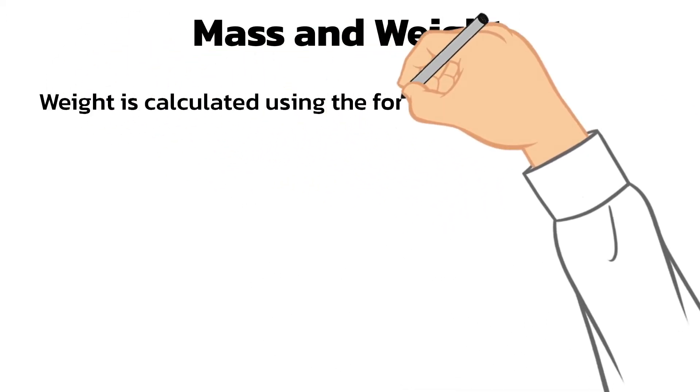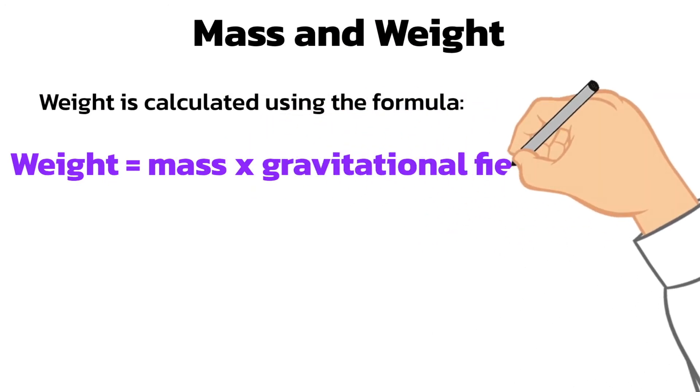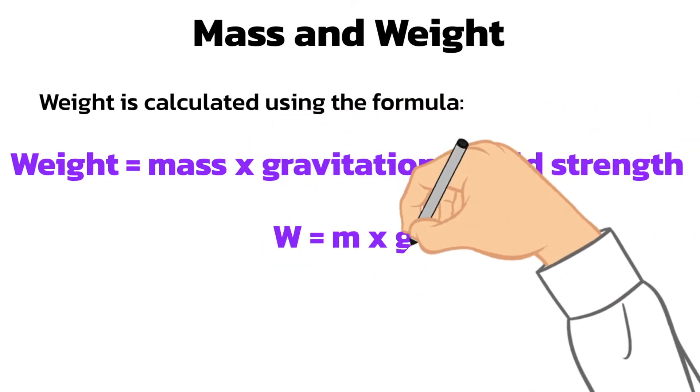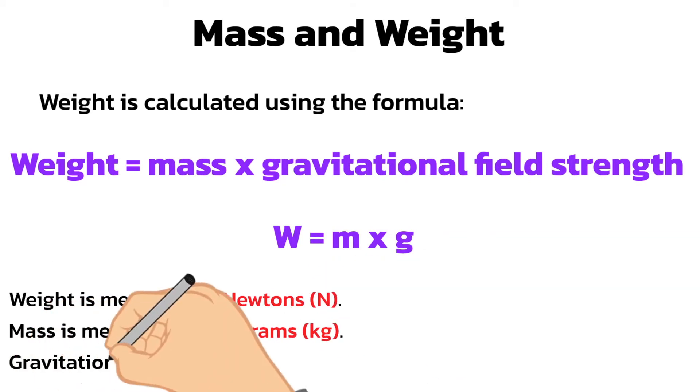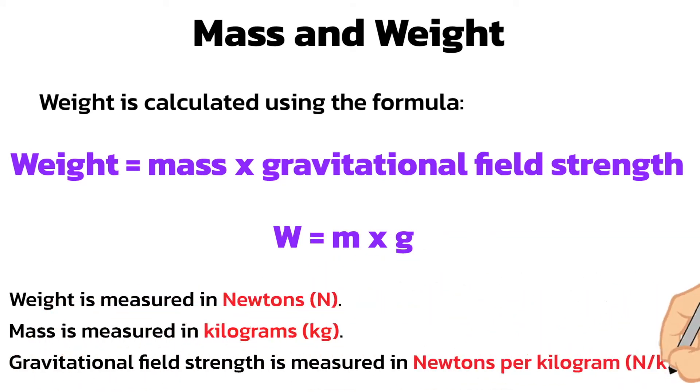Weight is calculated using the formula weight equals mass times gravitational field strength, or W equals M times G. The unit of weight is the newton. The unit of mass is the kilogram. And the unit of gravitational field strength is newtons per kilogram.